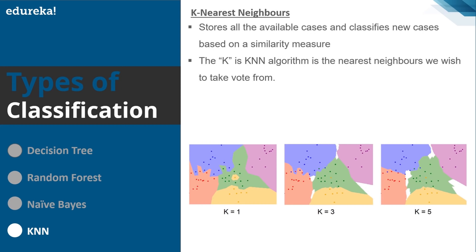KNN is also used in retail to detect patterns in credit card use. Transaction-scrutinizing software analyzes registered data to spot unusual patterns indicating suspicious activity — for example, if a lot of customer information is entered manually rather than through automated scanning, this could indicate employees stealing personal information, or if a particular item is returned multiple times, it could indicate employees misusing the return policy.